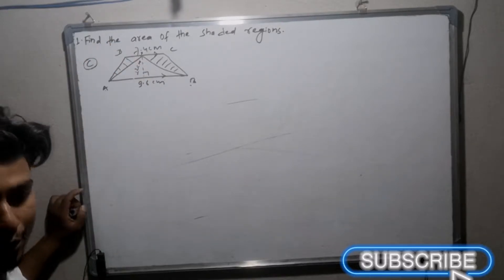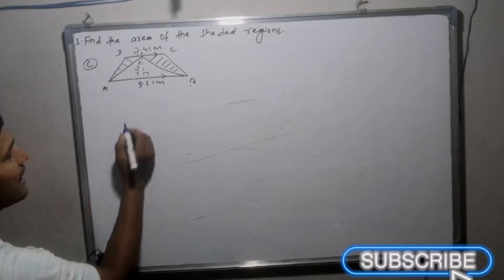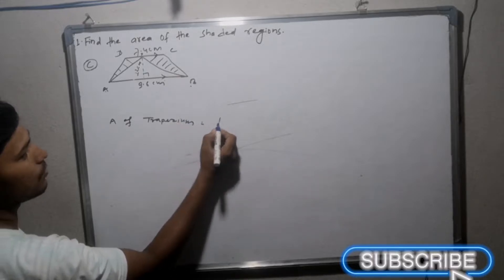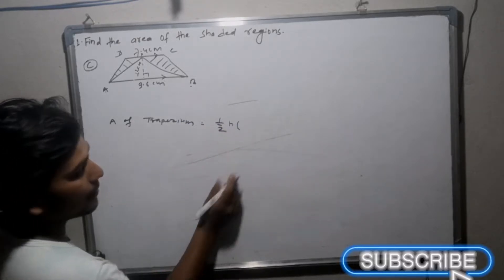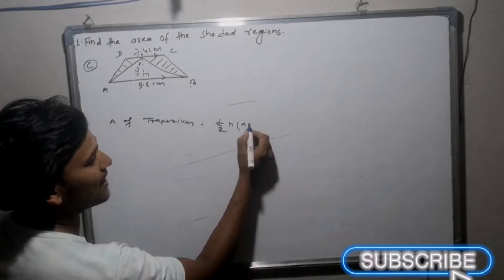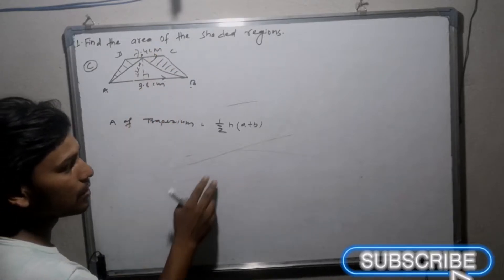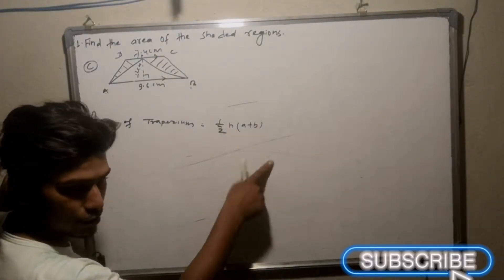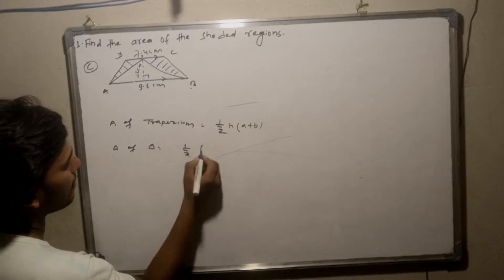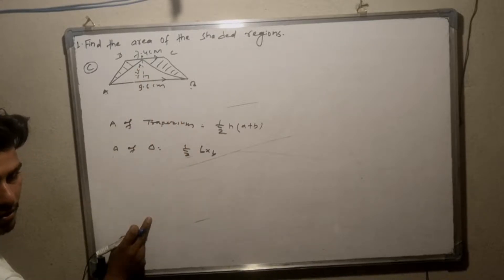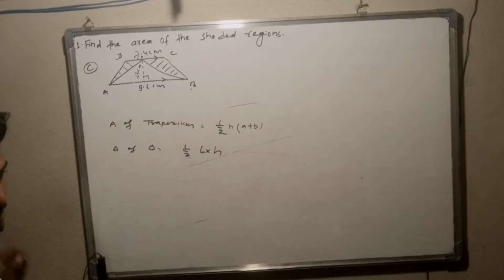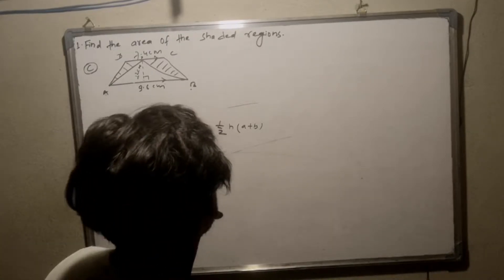We need to find the shaded region. Area of trapezium: one by two into height, plus parallelogram. Parallel sides A plus B. So A means A. One by two and height, some parallelogram. The area of triangle formula is half base into height. Base and height is B into H. If you subtract these two, the result will be fine.